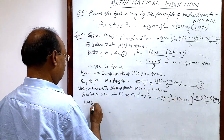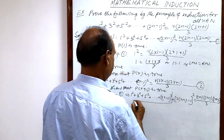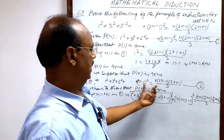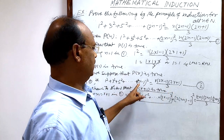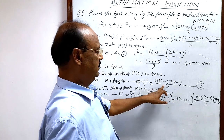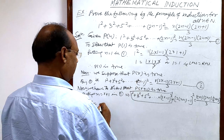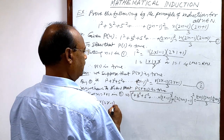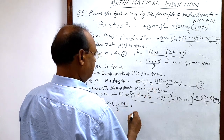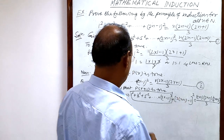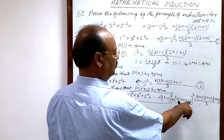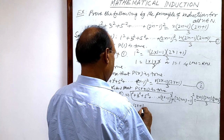The LHS up to the (2R−1)² part can be replaced by relation number 2. So LHS = R(2R−1)(2R+1)/3 plus the last term, which is [2(R+1)−1]² = (2R+2−1)² = (2R+1)².